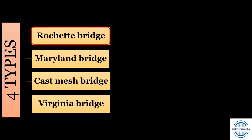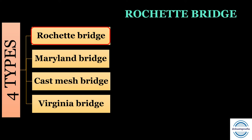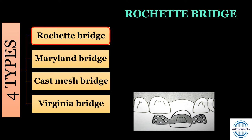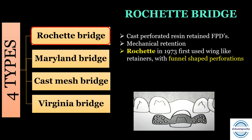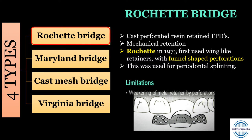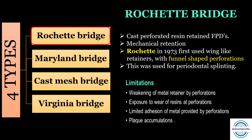First are the Rochette bridges. Perforations are made in the metal wings, so they are cast perforated resin-retained FPDs. The principle is entirely mechanical retention. Rochette in 1973 used wing-like retainers with funnel-shaped perforations to enhance resin retention, and these were first used for periodontal splinting. Limitations include weakening of metal retainers by perforations, wear of resin at perforation regions, limited adhesion provided by perforations, and plaque accumulation around perforations.